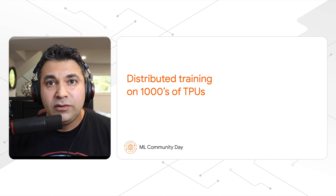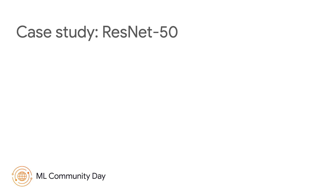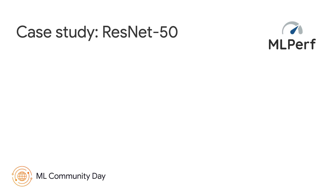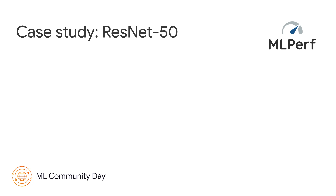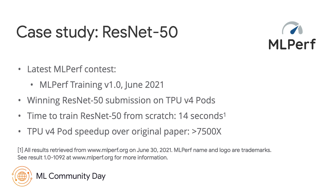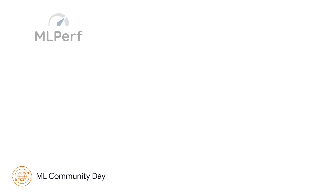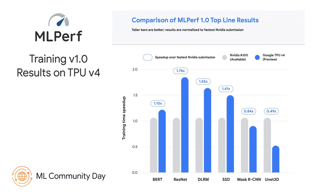Next, let's talk about distributed training using thousands of TPUs. The latest results of MLPerf, which were published in June this year, included a submission using TPU v4 pods for ResNet-50, which was the fastest time to train the model at just 14 seconds. As a comparison, when the original paper was published in 2015, the time to train the model was about 29 hours on GPUs. The winning submission from Google is using more than 3,400 chips to train ResNet-50.